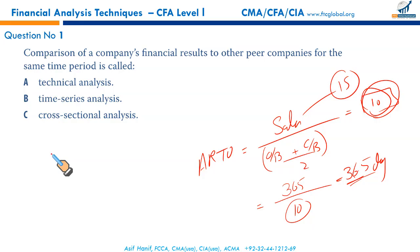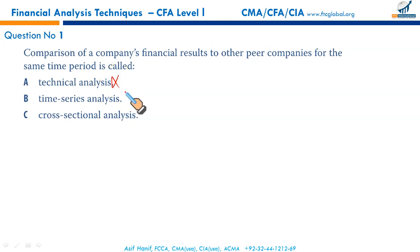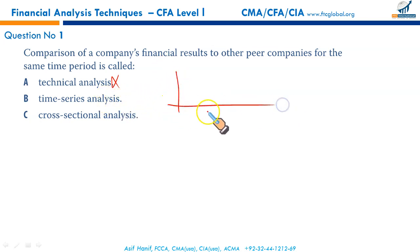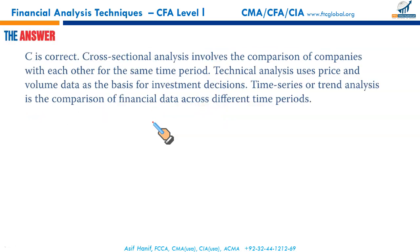Financial analysis techniques EOC questions. First question: comparison of a company's financial results to other peer companies for the same time period is called what? Technical analysis uses volume of stock traded and prices for making investment decisions, so that is not the right option. Time series analysis plots a variable on the horizontal time axis. Cross-sectional analysis involves the comparison of companies in the same industry over a period of time — that's the right option.